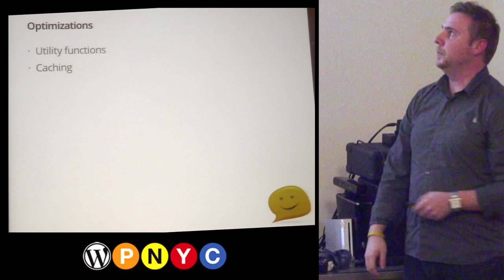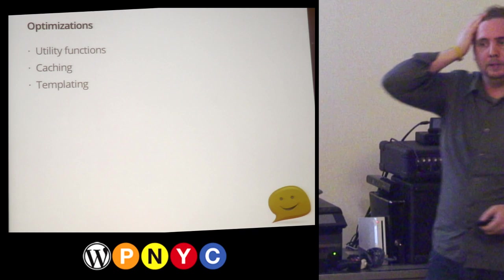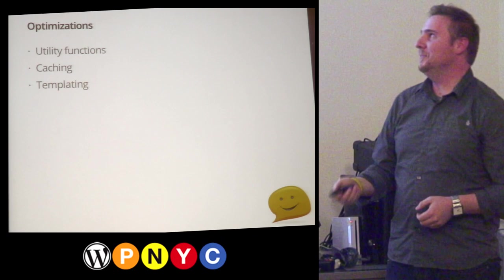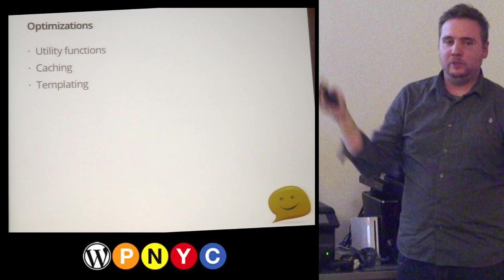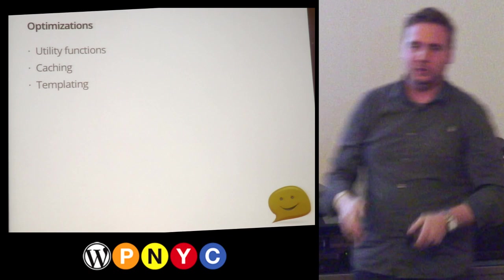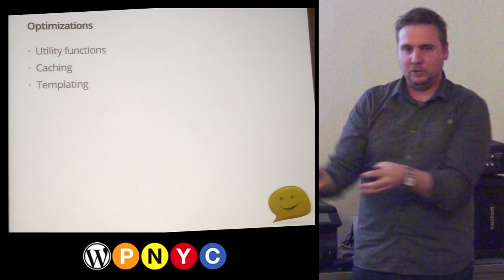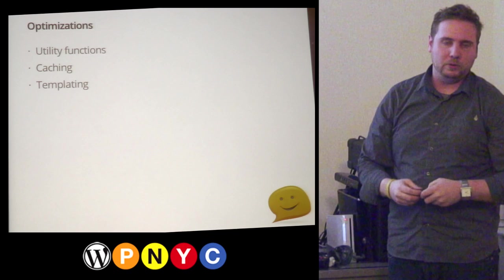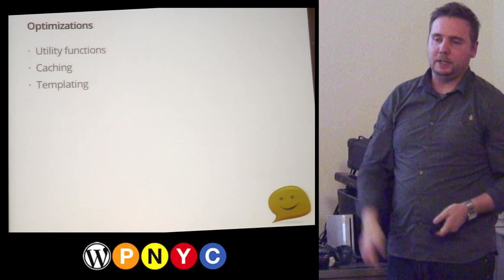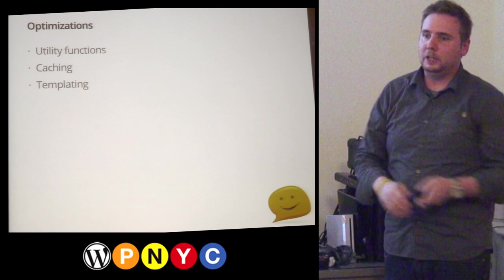Now I'll quickly go through some optimizations: utility functions, caching, and templating. Utility functions just reduce redundancy — you see yourself doing something all the time, and the function handles it. For example, if you're rewriting code for links, you create a link utility and can generate links on the fly. It saves a lot of development time and makes you more efficient. With Themify, we've got a bunch — things like XML to array, get image, set image, render templates, get file contents, get user role. These are tools for us and for people developing on our framework.